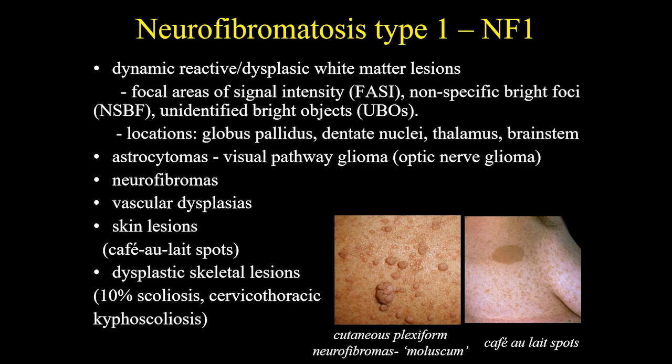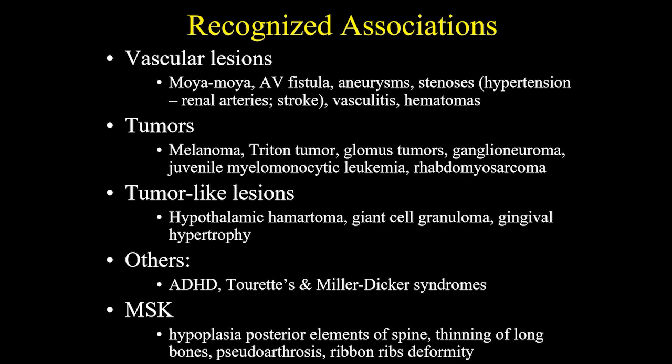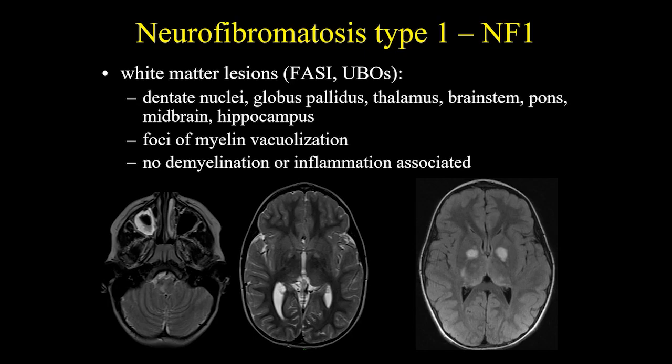10% of patients can have scoliosis, like cervical thoracic kyphoscoliosis. Other recognized associated lesions can be found — they can be vascular, other tumors, tumor-like lesions, ADHD, and also multiskeletal anomalies as well.